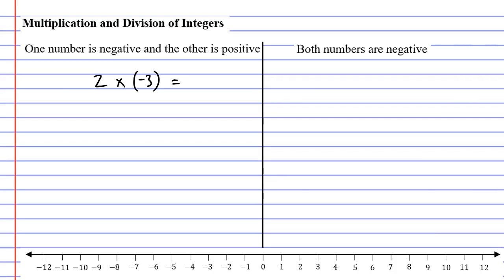So first, I'll show you a quick method to solve these. And when I solve them, I look at the two numbers. So I've got a 2 and a 3, and I completely ignore the negative for now. What is 2 times 3? Well, 2 times 3 is 6. Nice and simple.